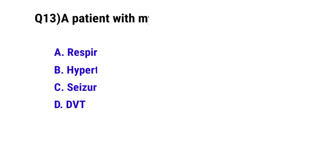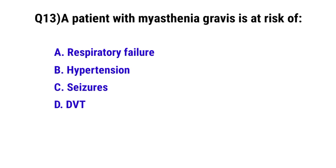Question number 13: A patient with myasthenia gravis is at risk of? The correct option is A: Respiratory failure.